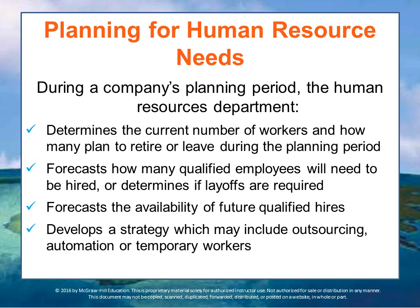When planning and developing strategies for reaching the overall organization's objectives, a company must consider whether it will have the human resources needed to carry out its plans. After determining how many employees and what skills are needed, the human resource department — which may be the owner of a small business or hundreds of people in a large corporation — ascertains how many employees the company currently has, how many they will need, and how many will be retiring or otherwise leaving during the planning period. With this information, the human resource manager can forecast how many employees the company will need to hire and what qualifications they must have, or determine if layoffs are required to meet demand more efficiently.